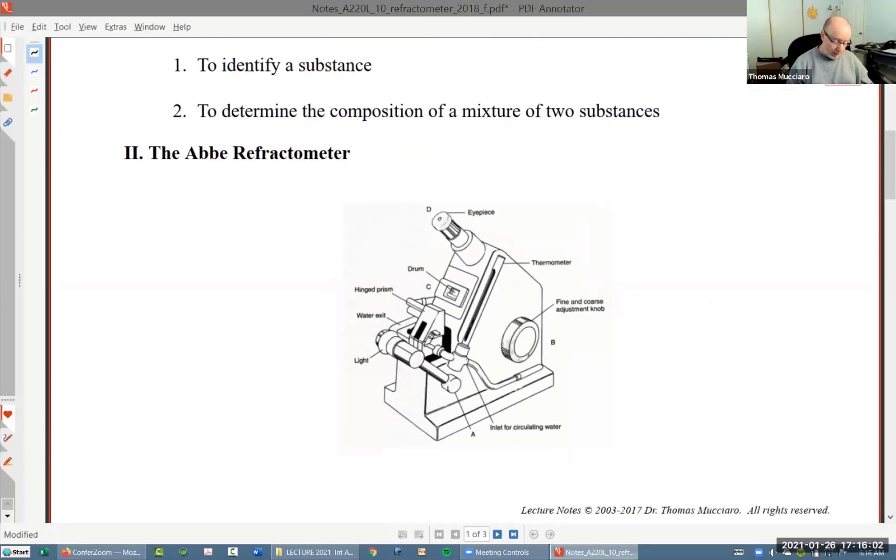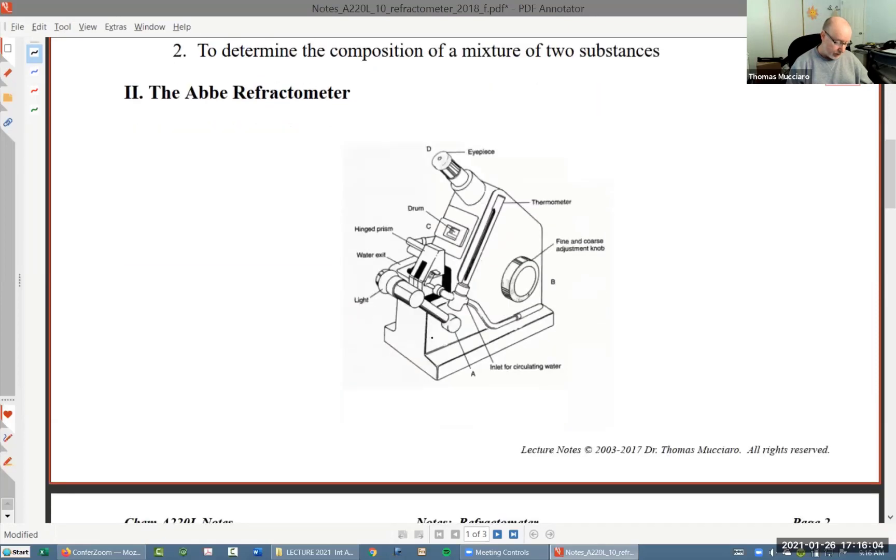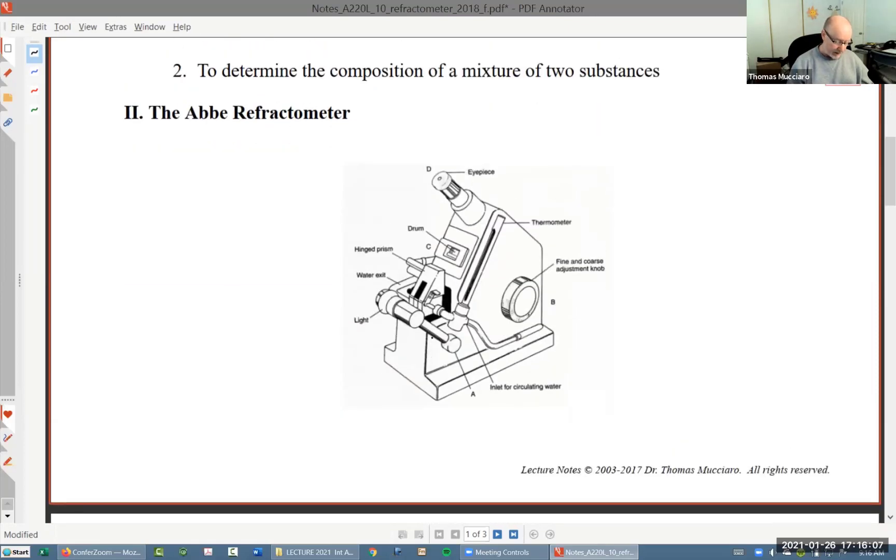Okay, so the refractive index is measured using an instrument called the Abbe refractometer. This is actually quite an old instrument. Abbe was a French scientist, and he worked in the 1850s. He developed this device, and basically we're still using it. It was a really great design. I think they've probably tweaked some aspects of it, but the basic concept of this device has not changed since 1850. So it's still called an Abbe refractometer.